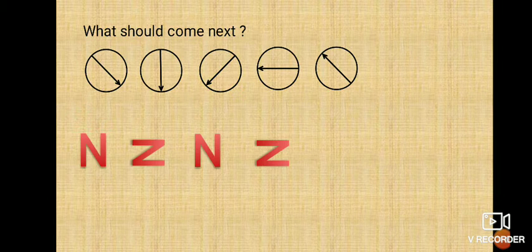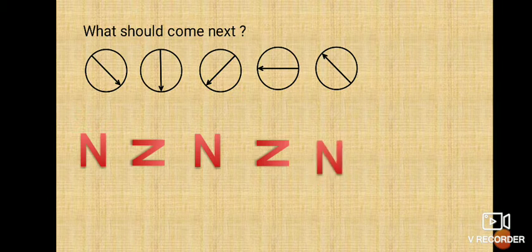Now see the letter N. The first letter N is standing, then the second letter N is sleeping, then again the third letter N is standing, and the fourth letter N is sleeping. So here we need to find out the fifth one. There are four types: one is standing, other is sleeping, another is standing, fourth one is sleeping, and fifth one is standing.